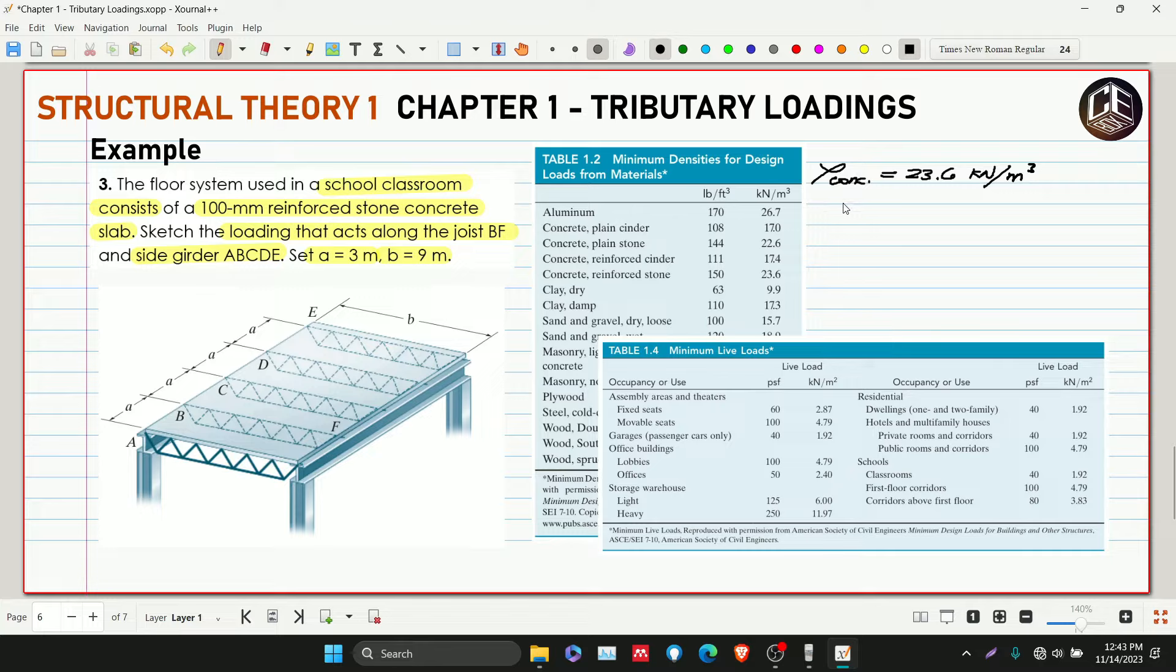For our live loads, the classroom loading under schools classroom is 1.92 kilonewton per meter squared.